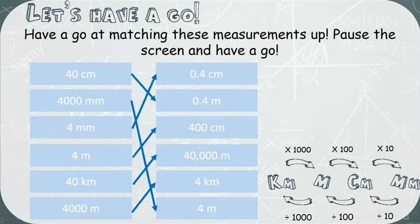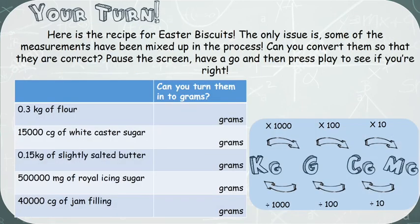Easter biscuits, however there's been a bit of an issue. Here is a recipe for some Easter biscuits and I would like you to convert them so that they are correct. So for example, the first one is 0.3 kilograms of flour. Well that's just a bit confusing to bake with, so I would like you to turn it into grams. Once you've had a go at doing all of them, pause the video and see if you've got the right answers. Good luck guys.